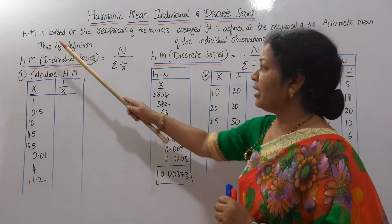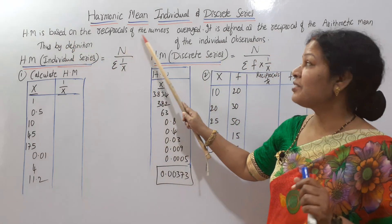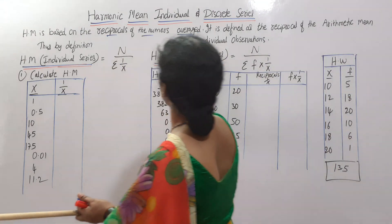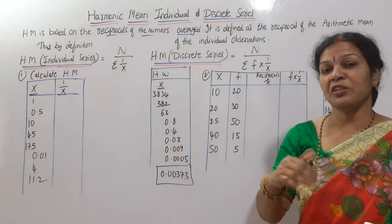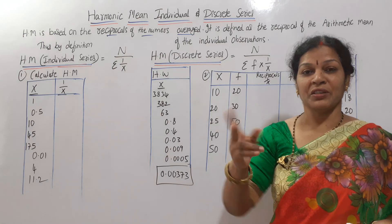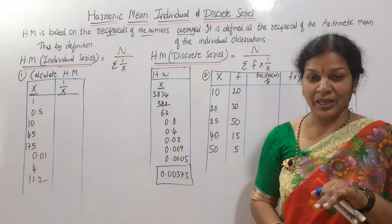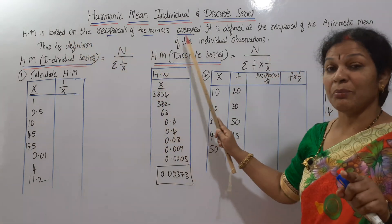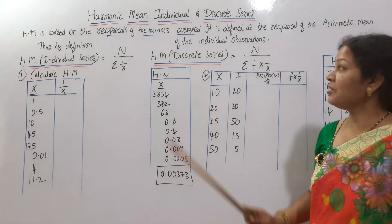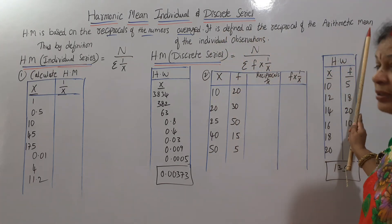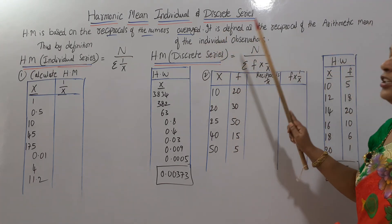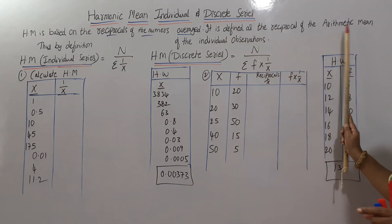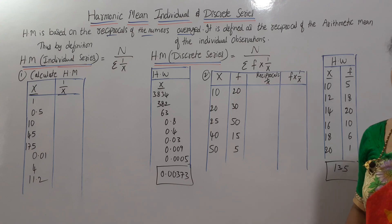What is harmonic mean? The definition: harmonic mean is based on the reciprocals of the numbers averaged. Remember — reciprocals of the numbers averaged. Reciprocals means reverse — when we do the normal calculation in reverse, that is reciprocal. Harmonic mean is defined as the reciprocal of the arithmetic mean of the individual observations — we are taking the reciprocal of each and every individual observation.